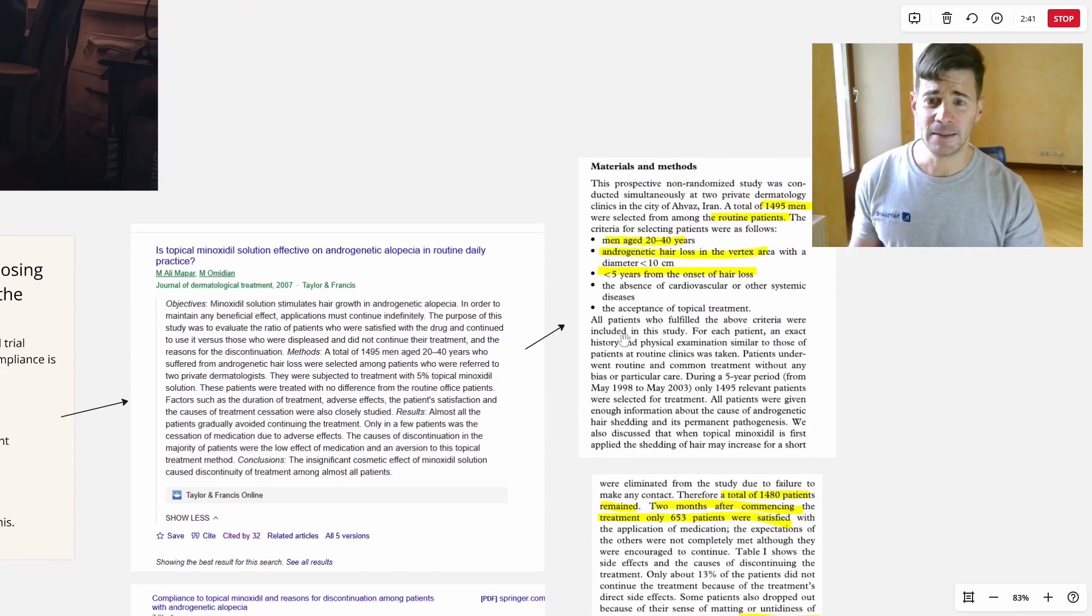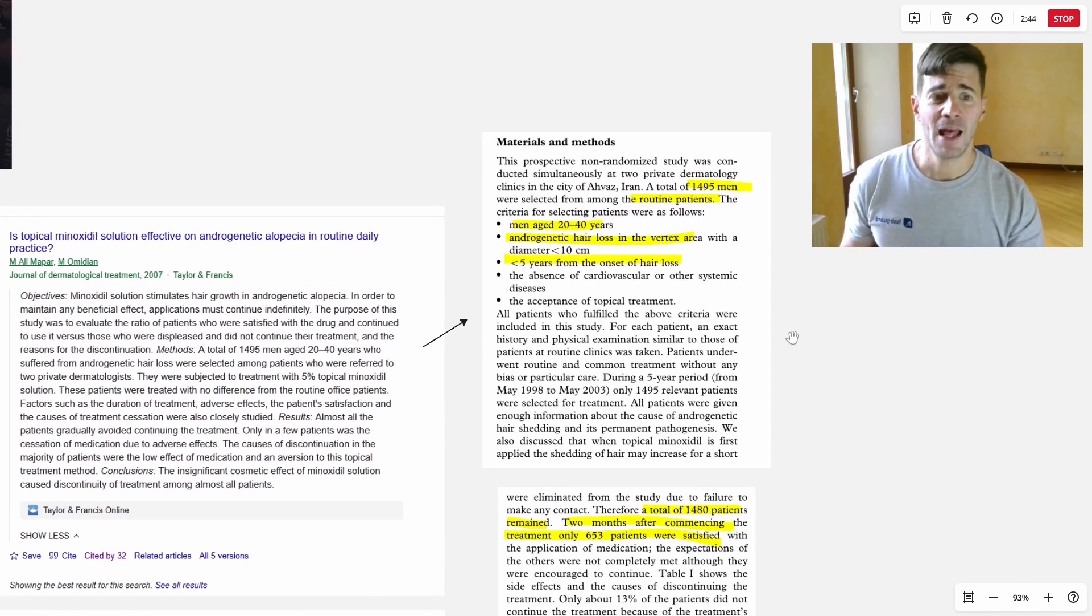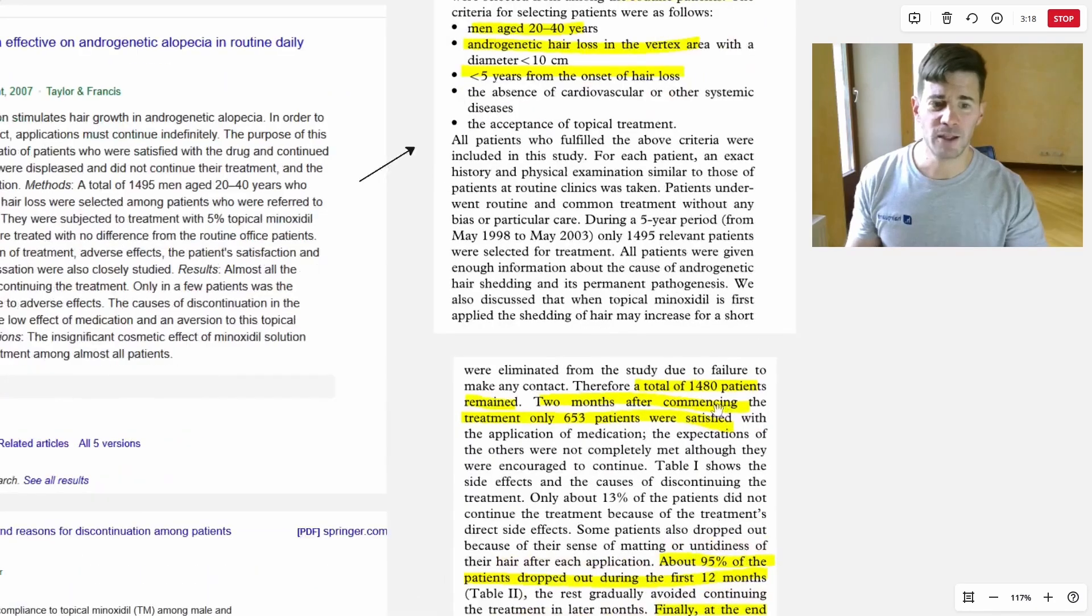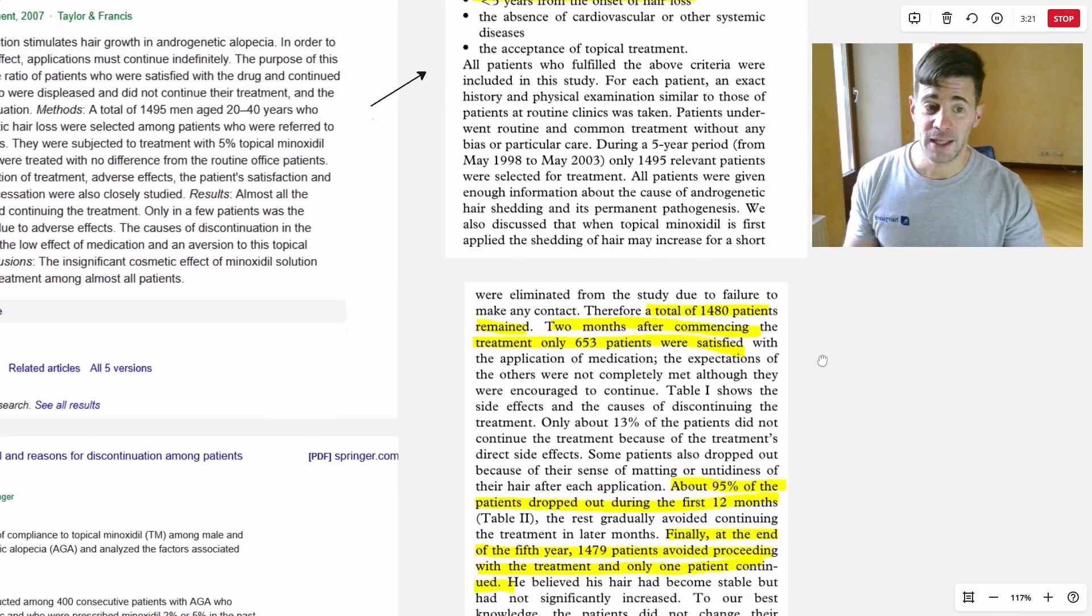What these doctors did from Iran, they looked at 1,495 men who were routine dermatology patients complaining of hair loss, of androgenetic alopecia. These men were 20 to 40 years old. They had hair loss in the vertex, which is particularly amenable to treatment, and they had five years or less duration of hair loss. So relatively young, relatively early stage hair loss. This was a very good population for treatment.